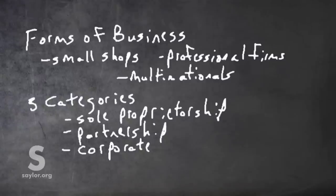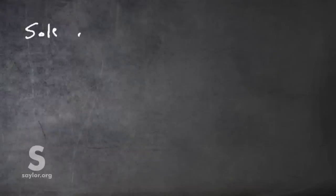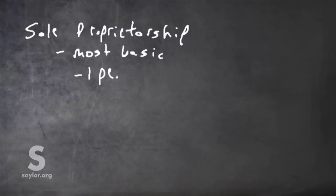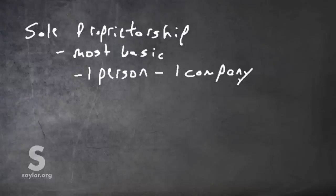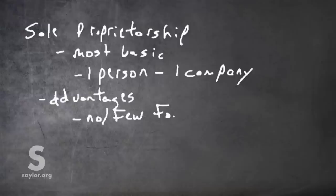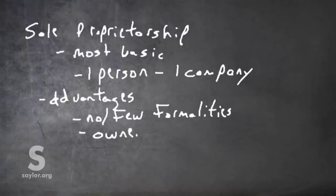Let's start by taking a look at sole proprietorships. Sole proprietorships are the most basic form of business organization. Basically, one person — and that person and the company are one. The owner is a single owner in complete control.